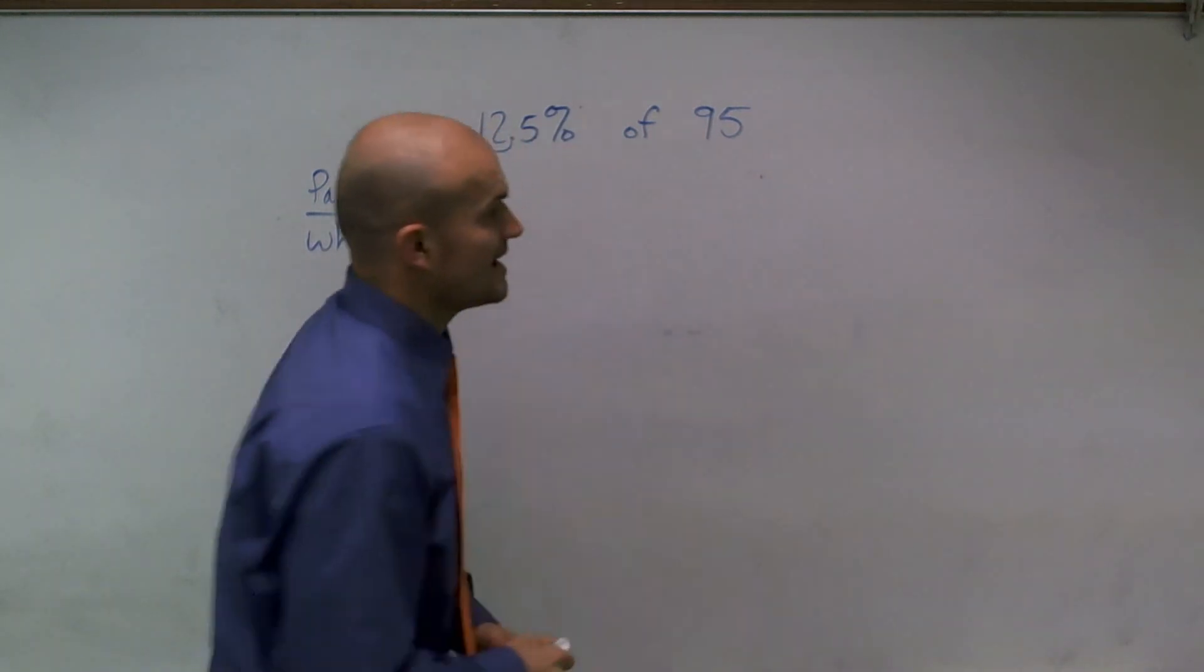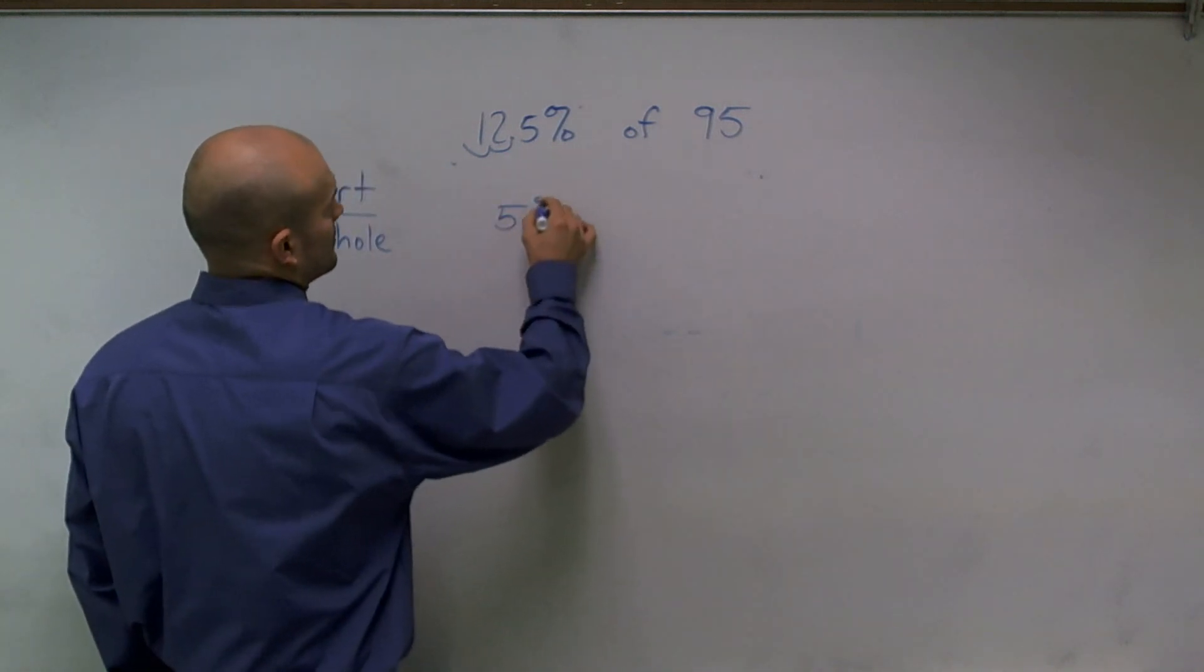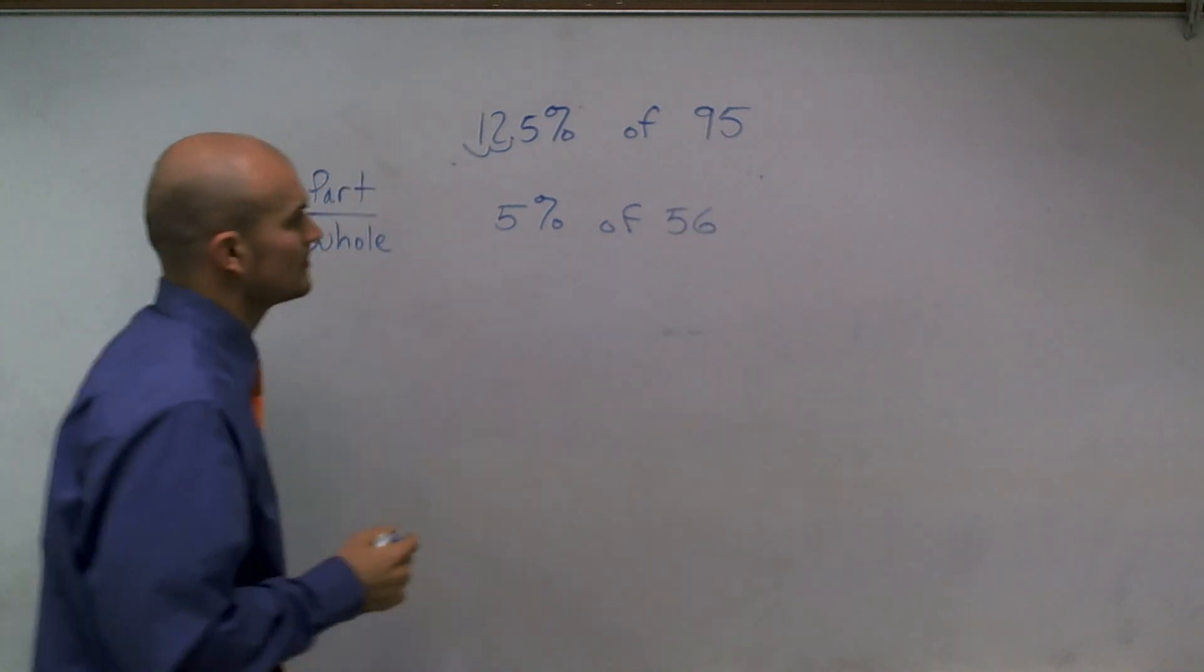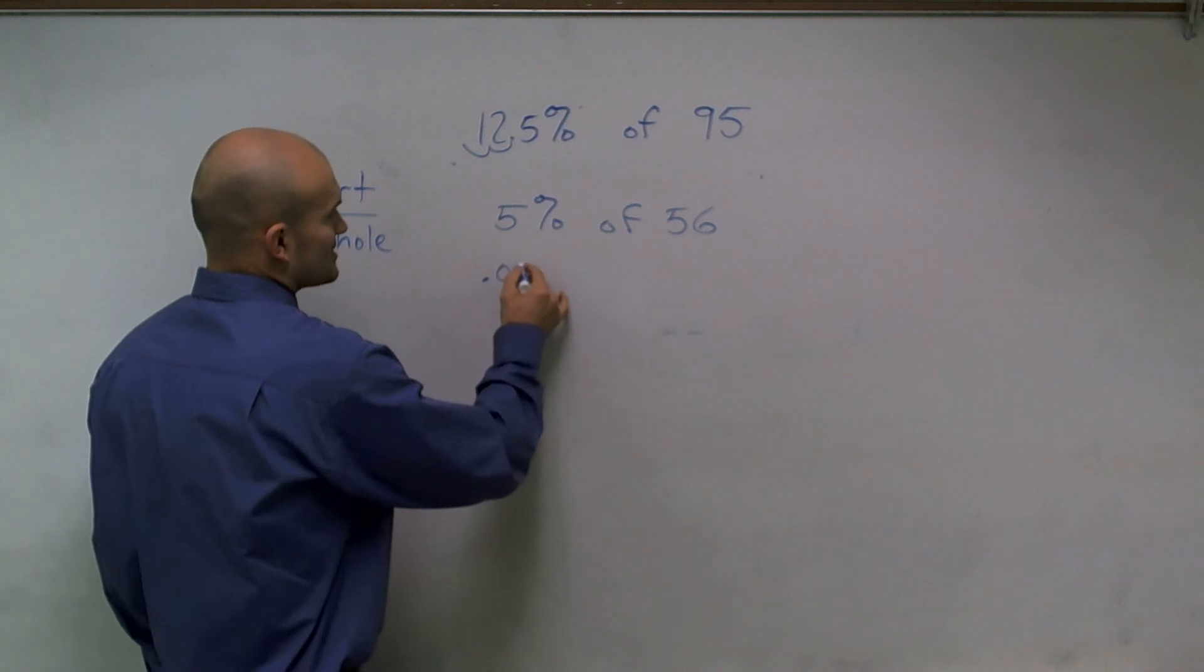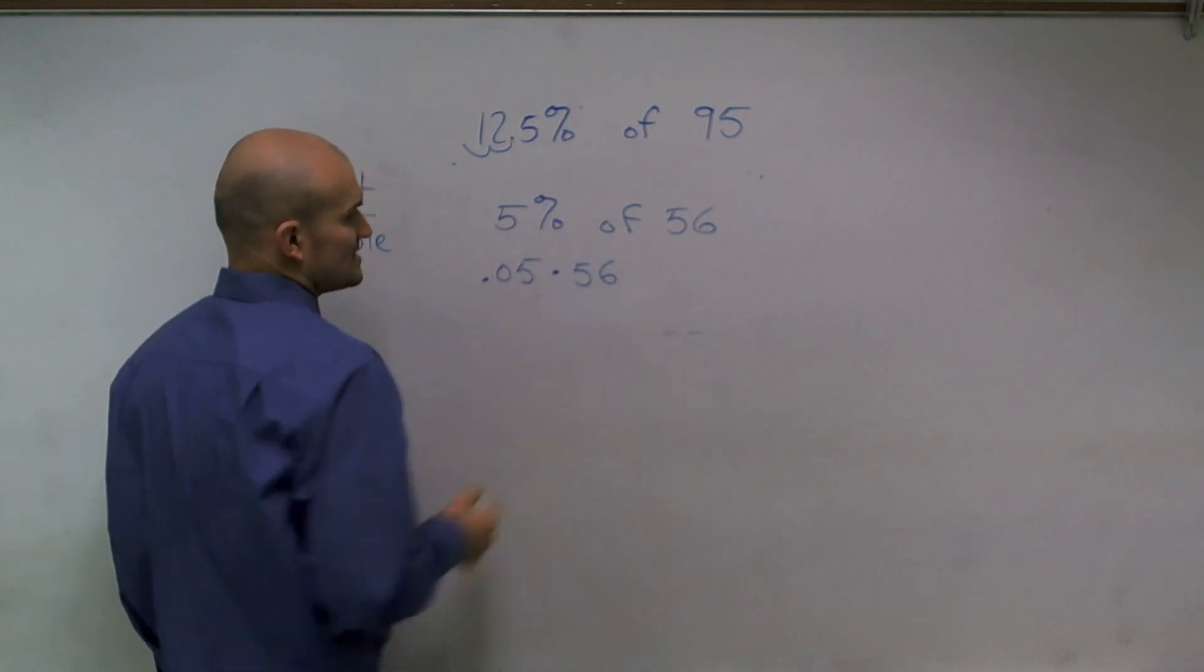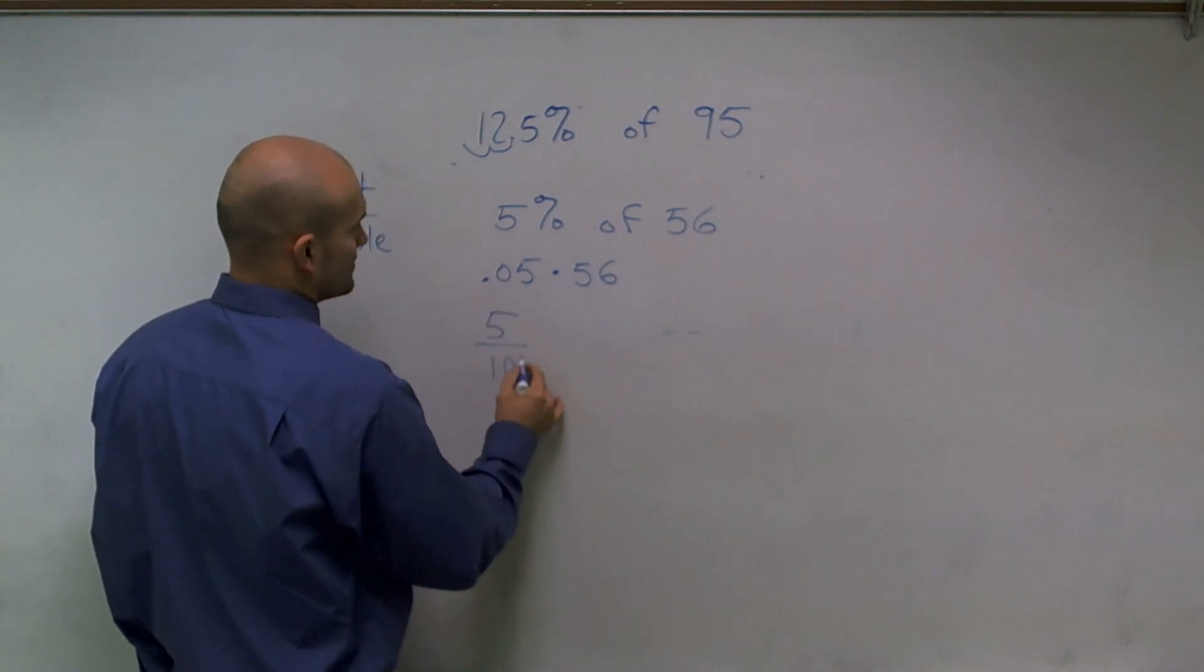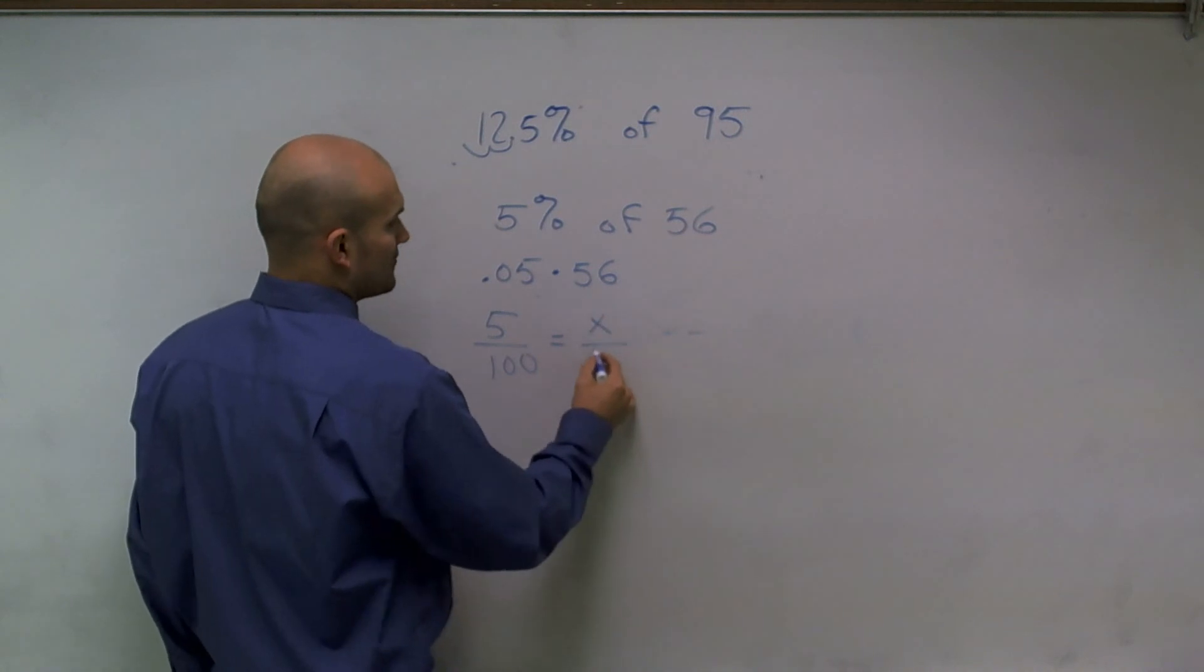So let's say I asked you to do 5% of 56. Well, there's two ways you can do this. Convert this to a decimal, 0.05 times 56. Or you could say 5% out of 100 has to equal what number out of 56?